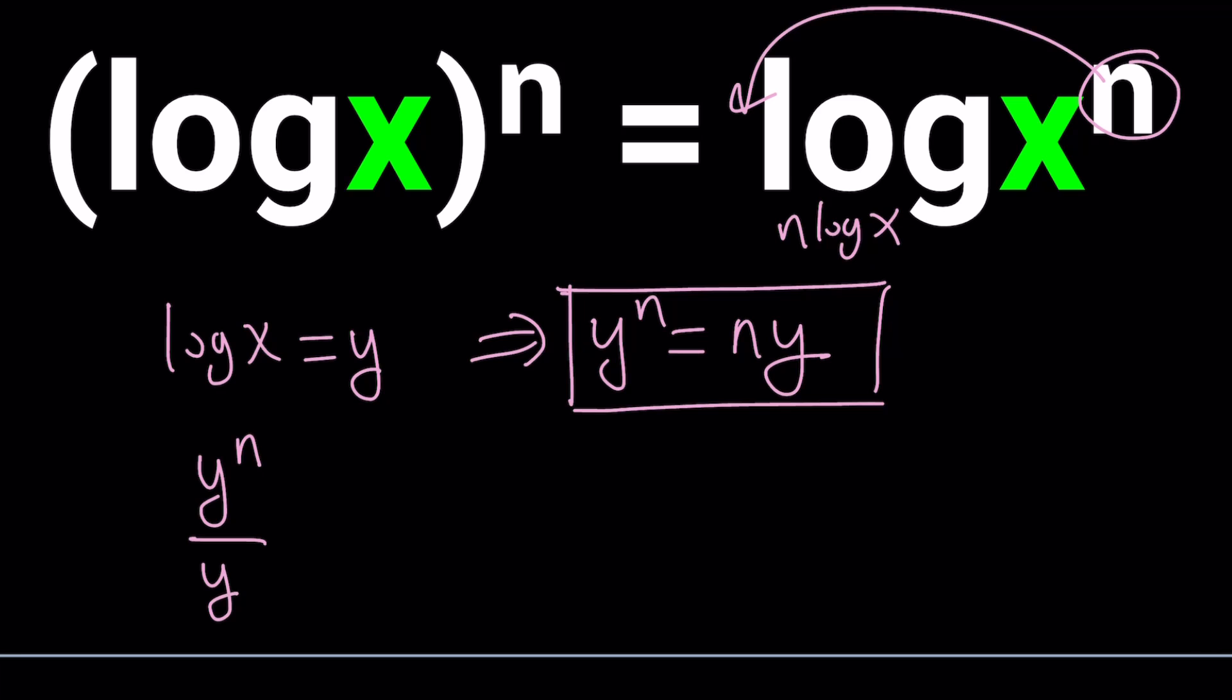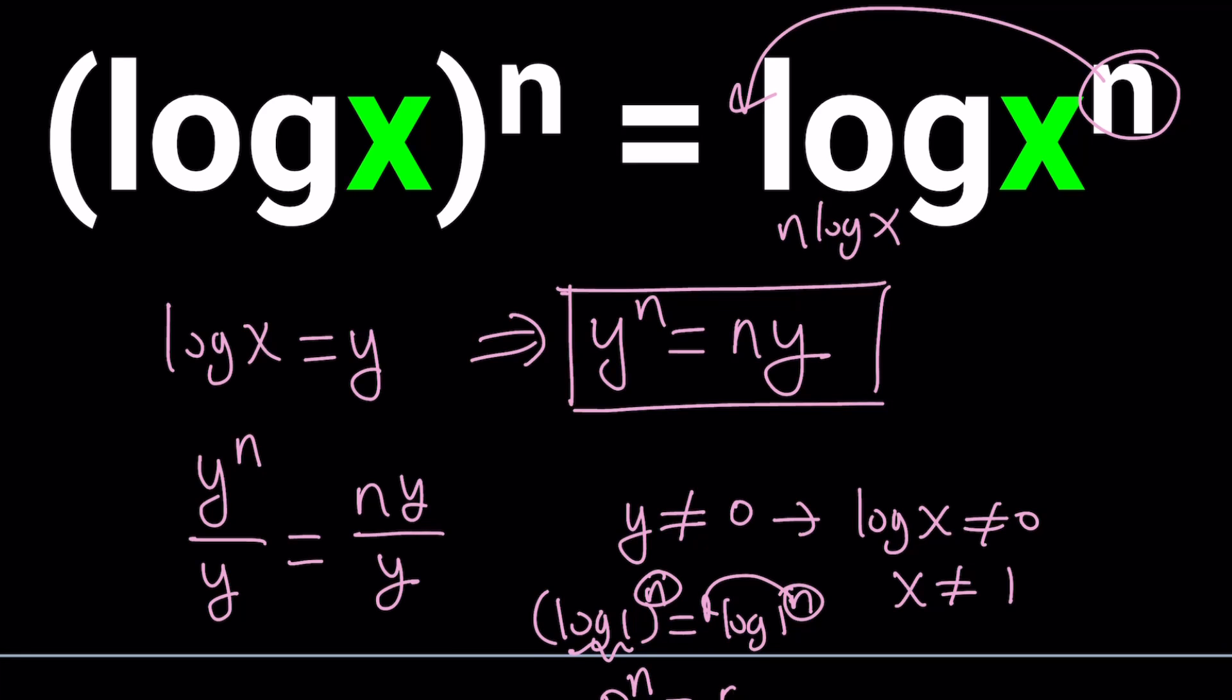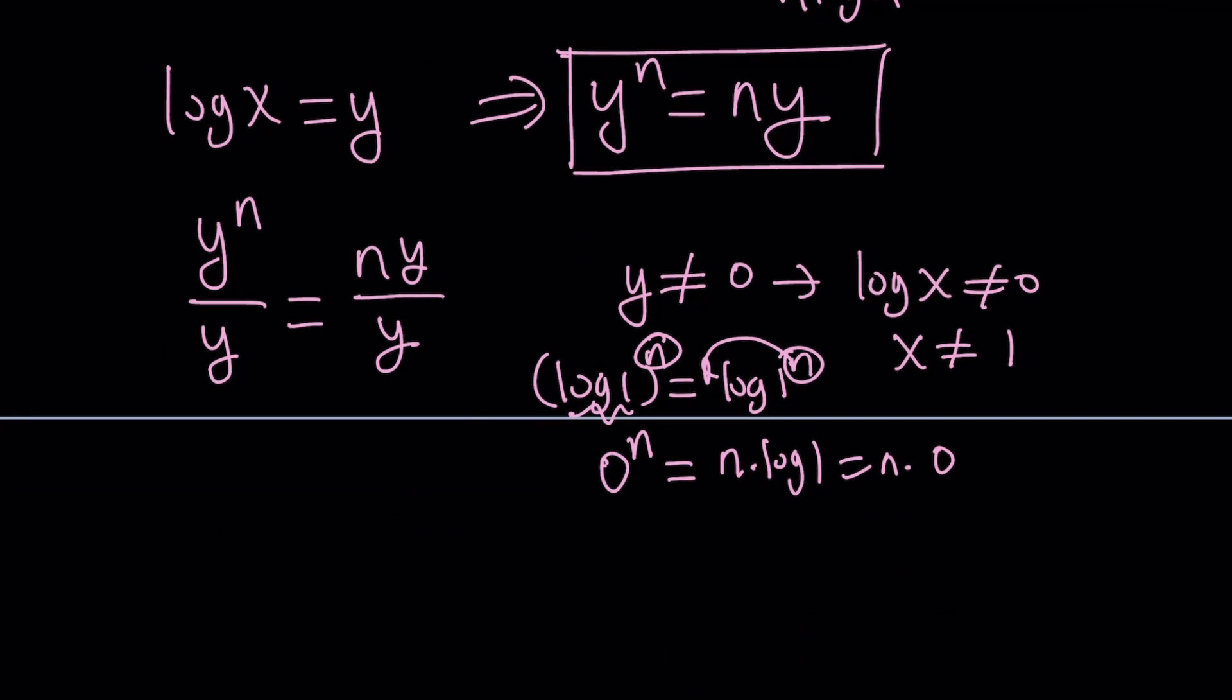So to solve for y we're going to divide both sides by y to the first power. So like this, y^n divided by y equals ny divided by y. Of course, we need to mention that y should not equal 0. And what does that entail? That just means that log x cannot be 0, which means x cannot equal 1. Now if x equals 1 a solution, we can separately check.